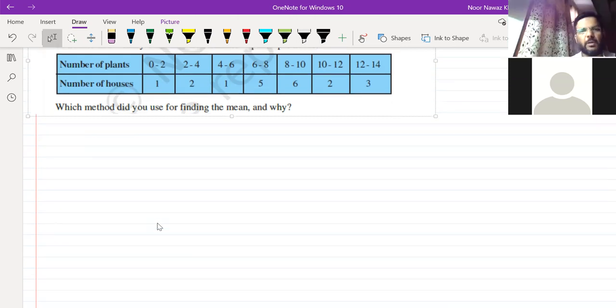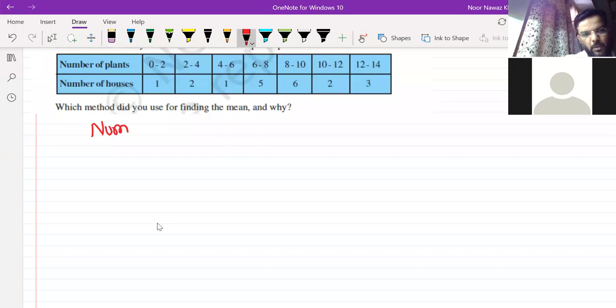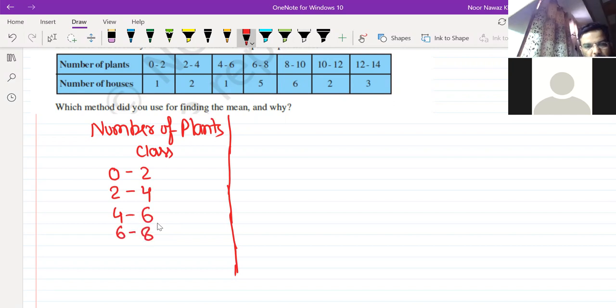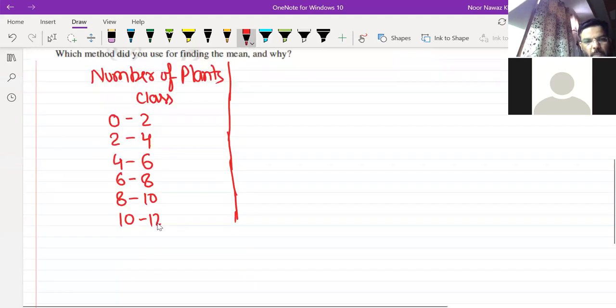So let's draw this table first. We will do the question. What is the number of plants? The number of plants. In simple language, we can call classes in simple language. So the number of plants has mentioned that there is a house with 0-2 plants, or 2-4 plants, or 4-6 plants, 6-8 plants, 8-10 plants, 10-12 plants, or 12-14 plants. So you have one column.